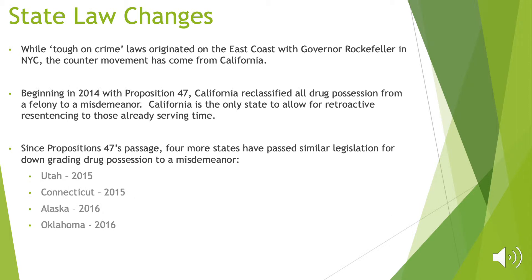While tough-on-crime laws originated from the East Coast and Governor Rockefeller, the counter-movement came from California. In 2014, Proposition 47 reclassified all drug possessions from a felony to a misdemeanor. At the time, California was the only state that allowed for retroactive re-sentencing for people already serving time. Since California proposed Proposition 47 in 2014, four other states have passed similar laws downgrading drug possession from a felony to a misdemeanor.